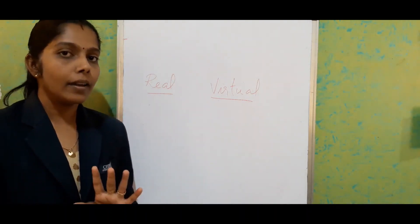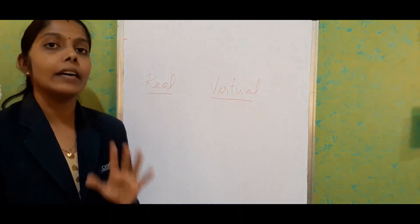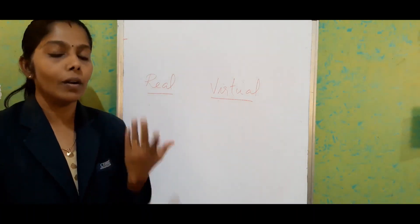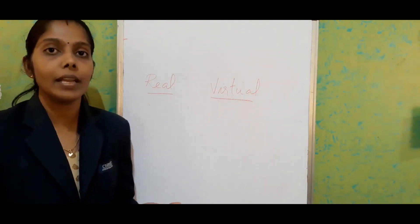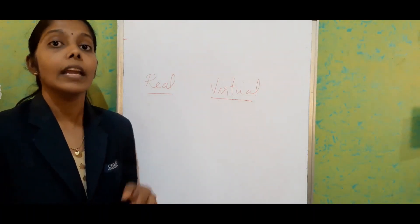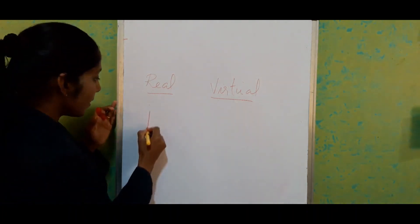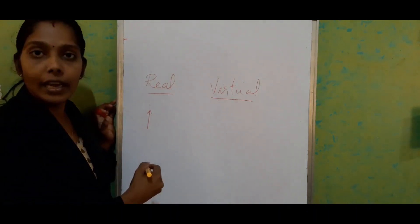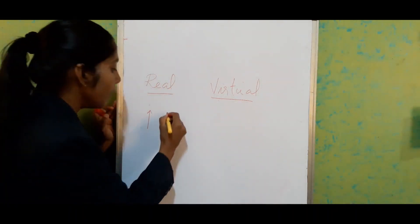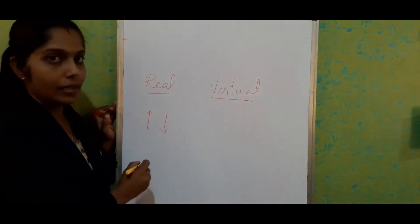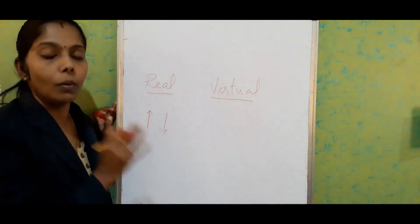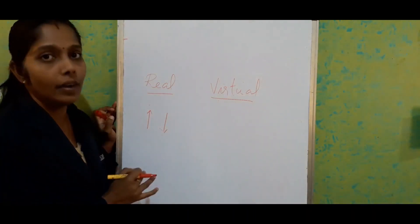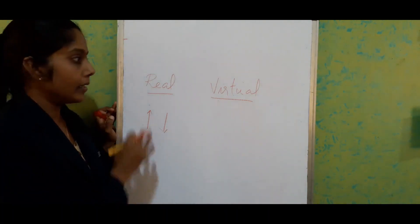The third point is that we never get an erect image — a real image always forms an inverted image. That is the most important point related with a real image.